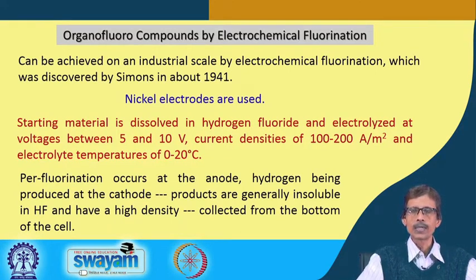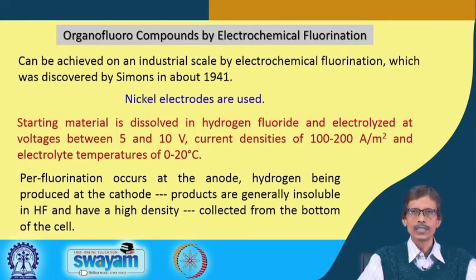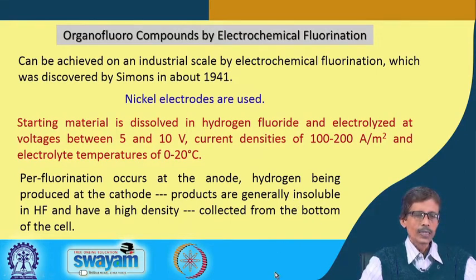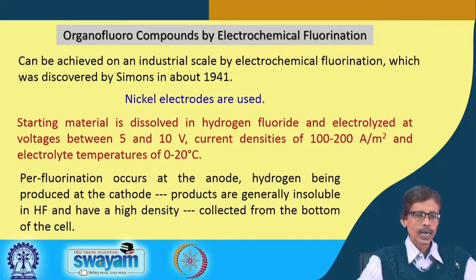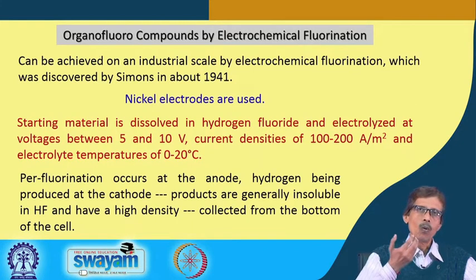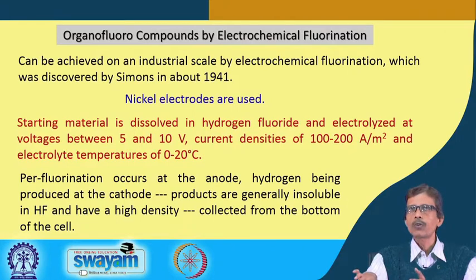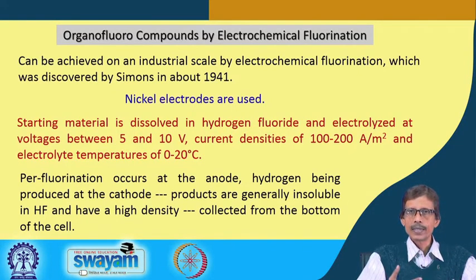The key criterion for this electrolysis reaction is that your starting material is soluble in HF, but your product P is insoluble in HF and has a high density — it is heavier. The fluorinated molecules are heavier than the starting material, so the product is collected from the bottom of the cell. Since it is insoluble in HF, it separates out and settles at the bottom of the electrolysis cell.